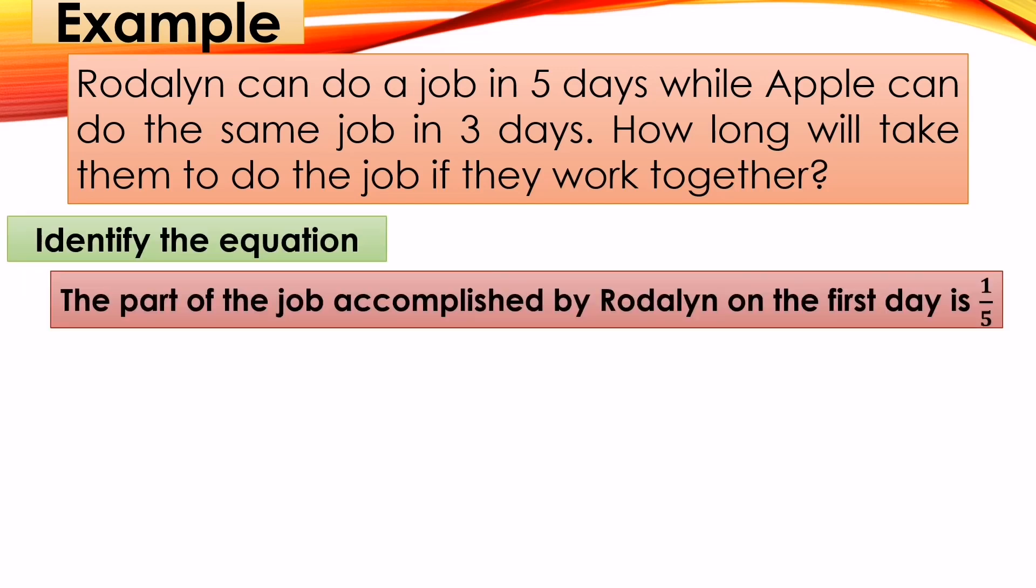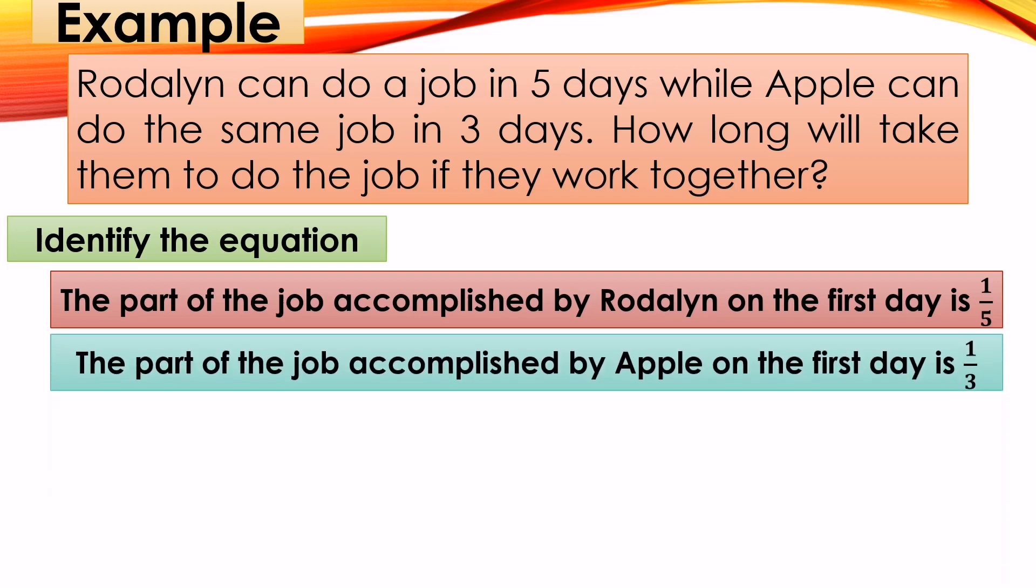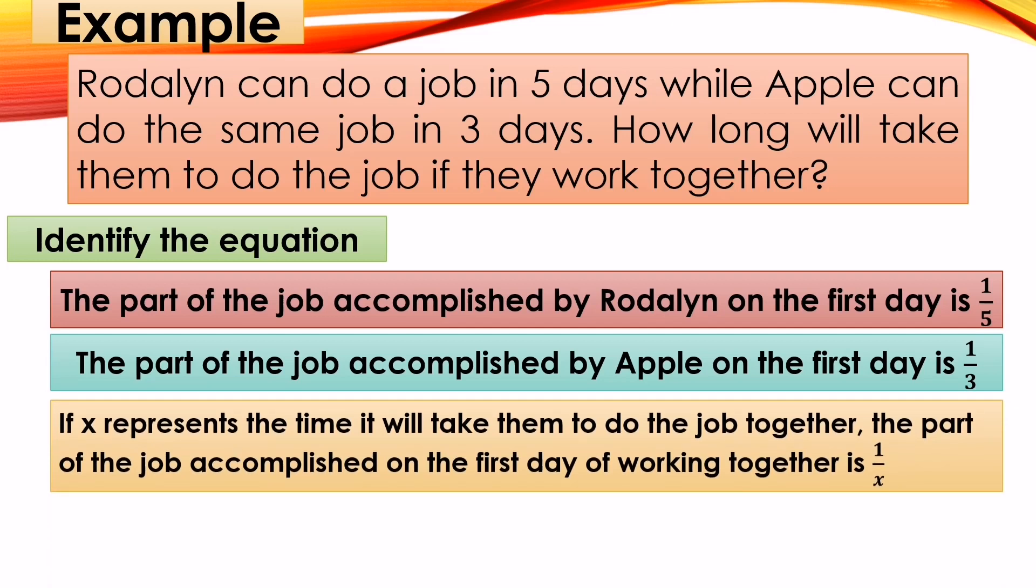First, the part of the job accomplished by Rodalin on the first day is 1/5 in five days, while the part of the job accomplished by Apple on the first day is 1/3. And also, if x represents the time it will take them to do the job together, the part of the job accomplished on the first day of working together is 1/x.